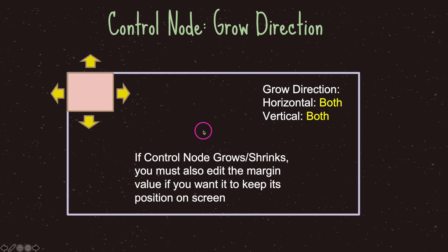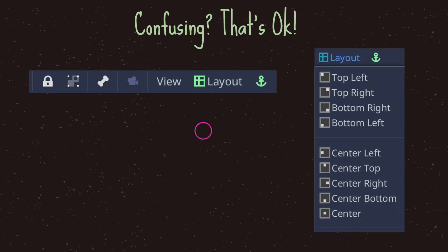One thing to keep in mind: if a control node grows or shrinks, it will not automatically fix the margin value for you, so you may end up with a position you didn't intend. You need to edit your margin values as well in order to get the position you want to show to the player. The relationship between anchor, margin, rectangle value, and grow direction can be confusing because changing one value will affect the others.